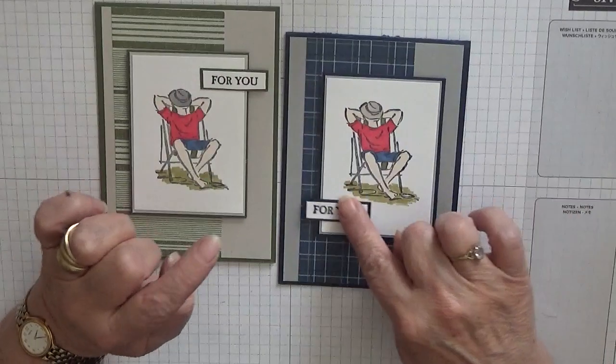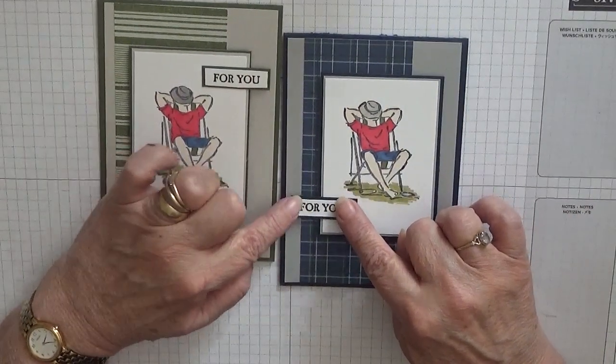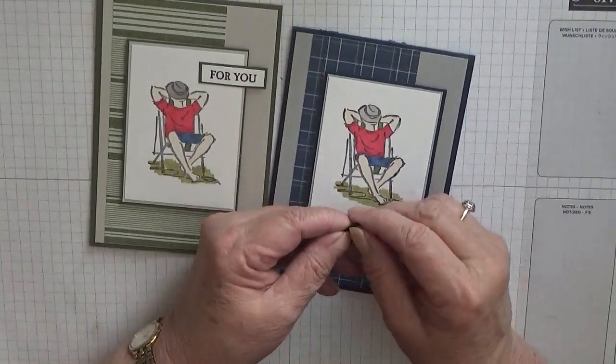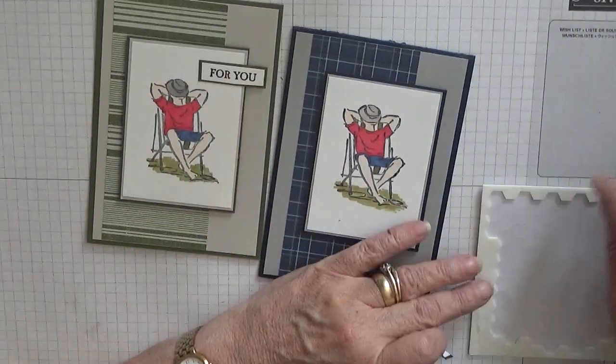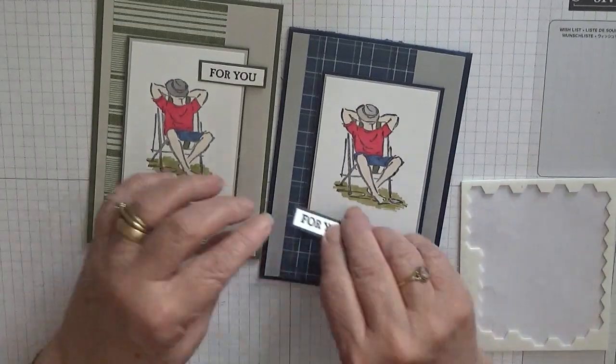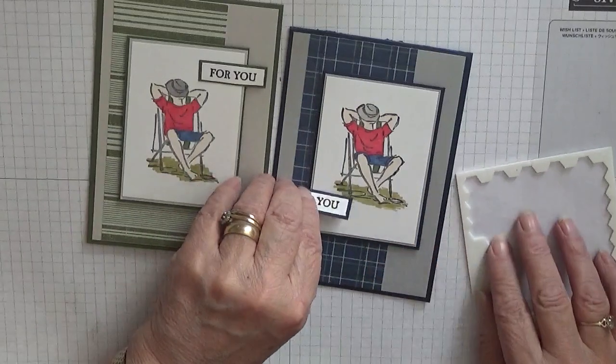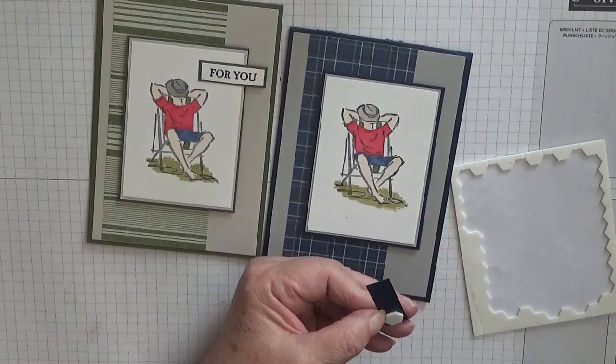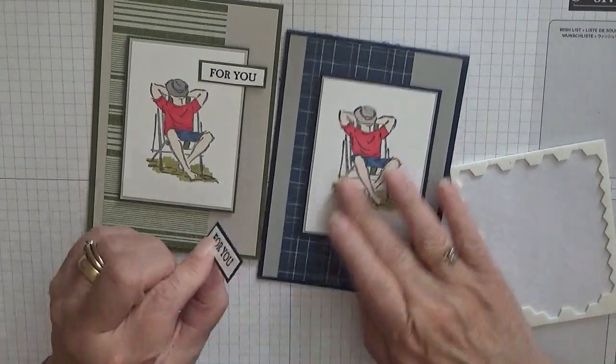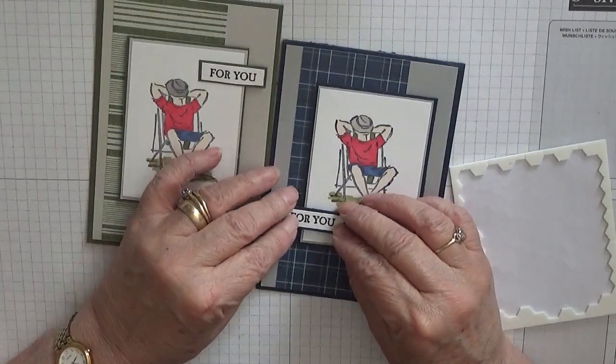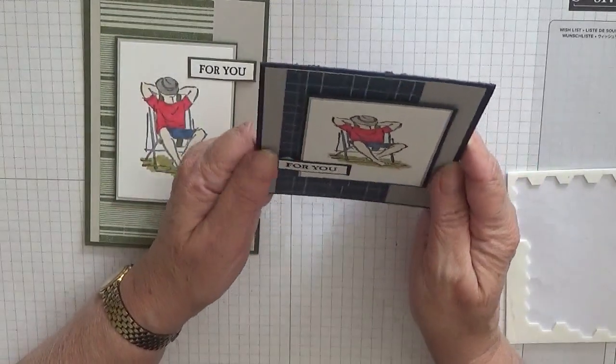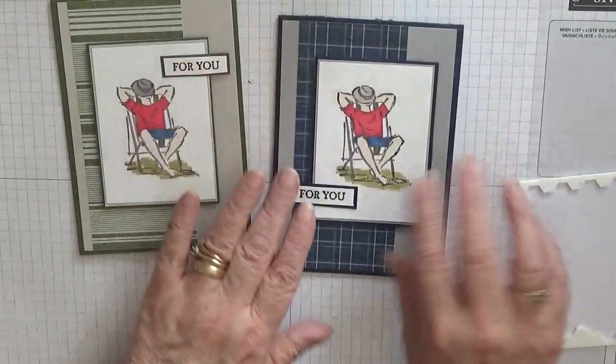I've decided I'm going to put that there on this one. I've stamped him a little bit higher up, so I'm going to put it off just like that. I'm going to put a dimensional there and we'll glue this end. We'll just pop that on. There we are.